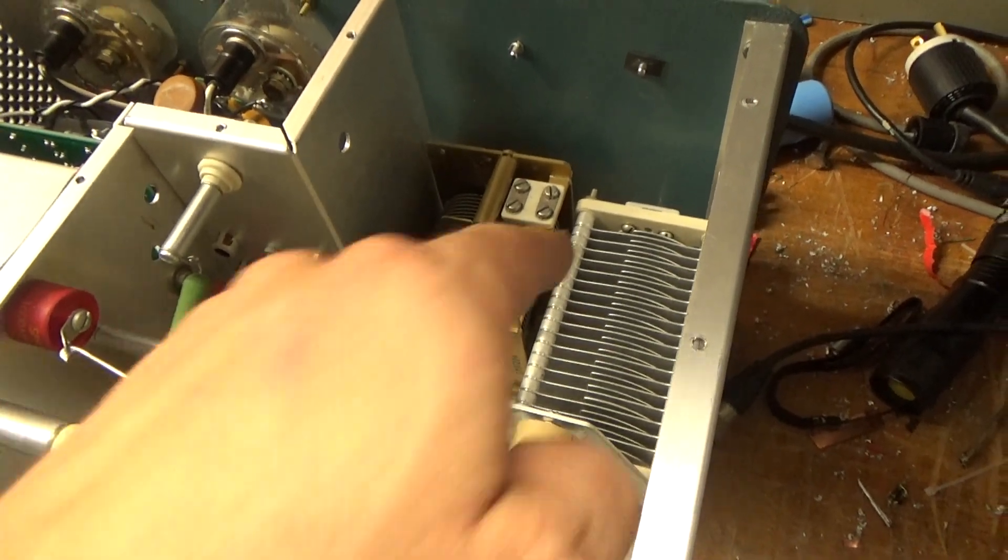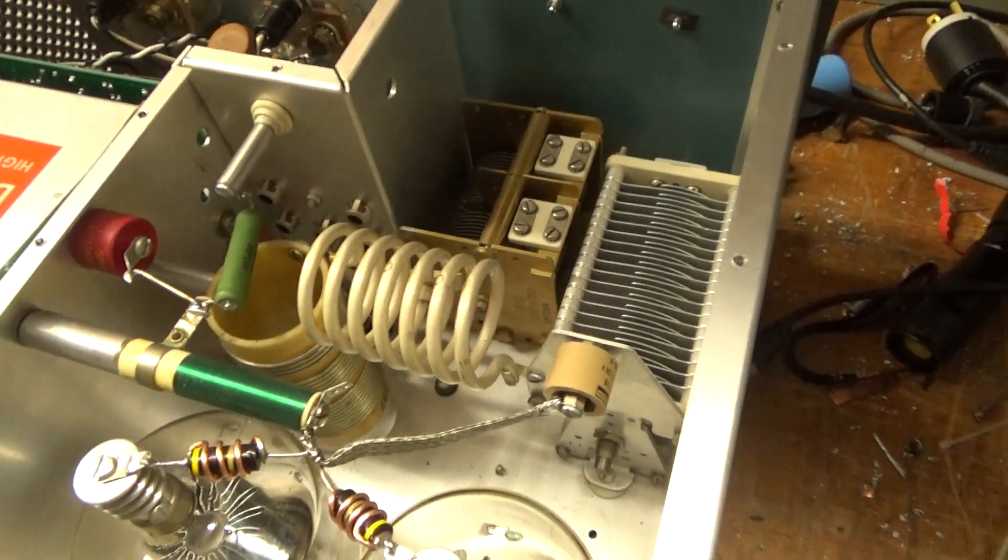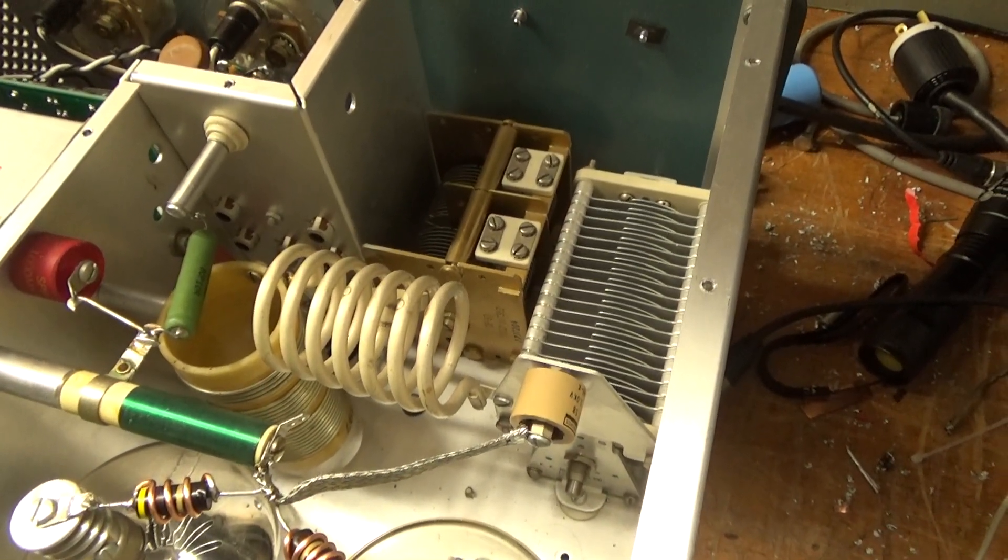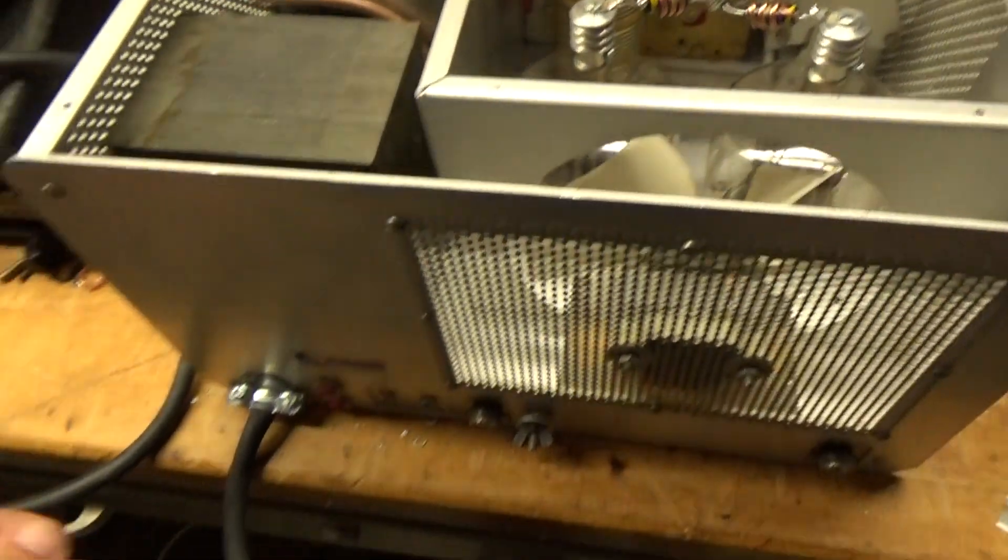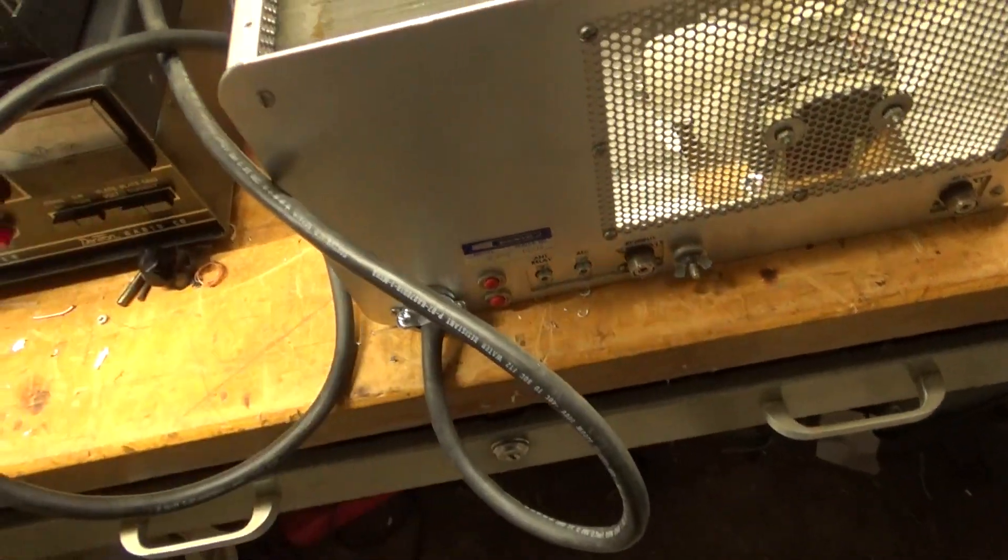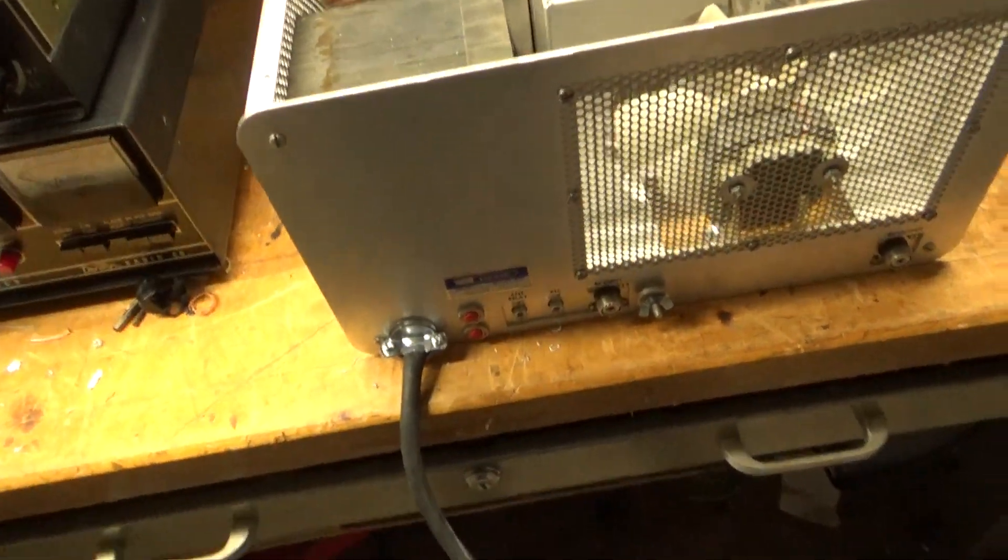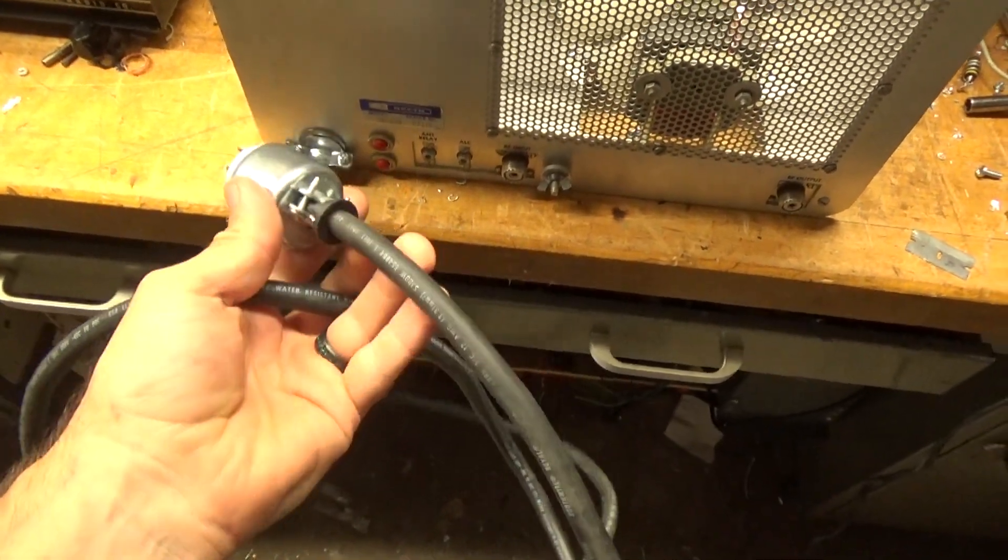Checked all the fins on the air variables. They look good. Made sure they're secured to the chassis. Nice and tight. I ended up replacing the power cord with a new type of strain relief, number 12, SOW-type cord, 240 plug.